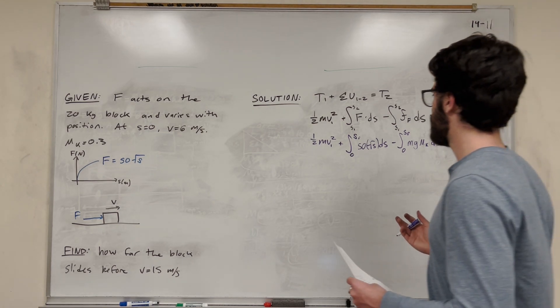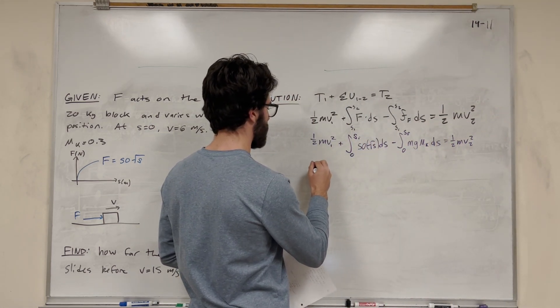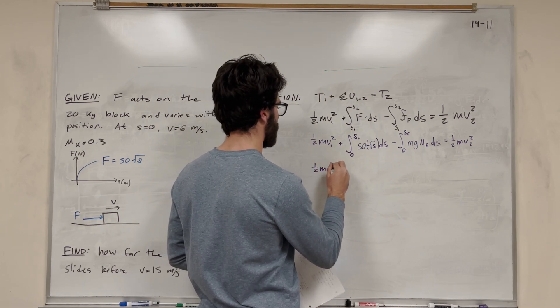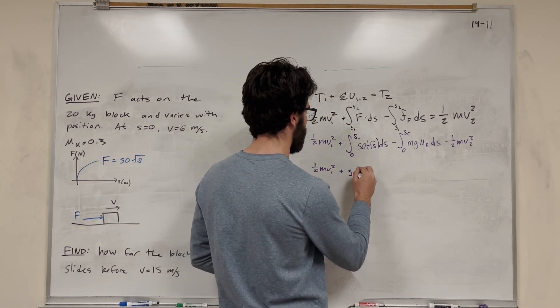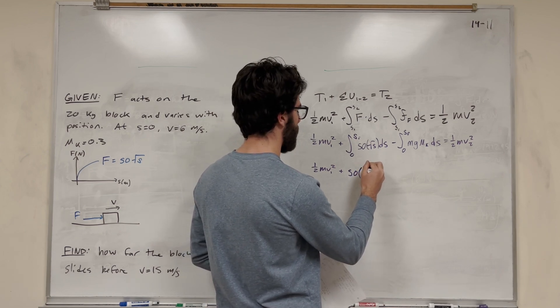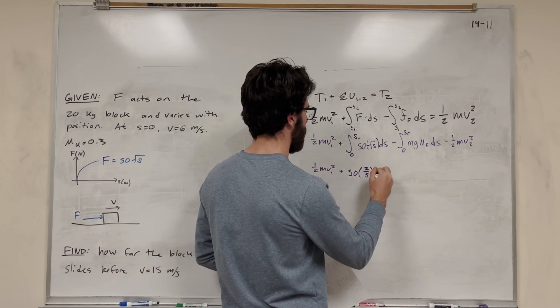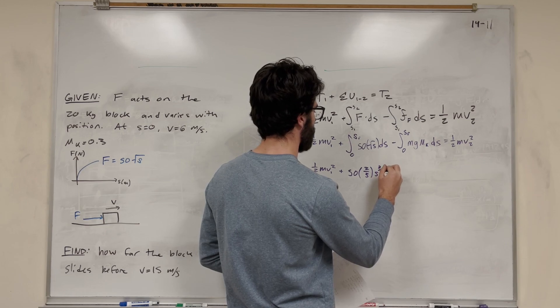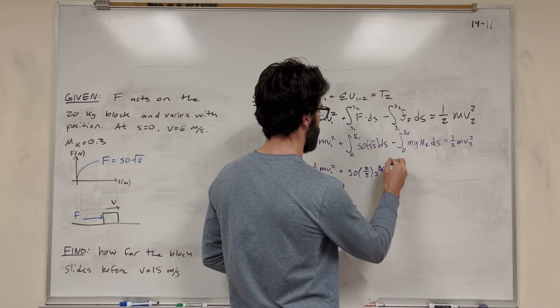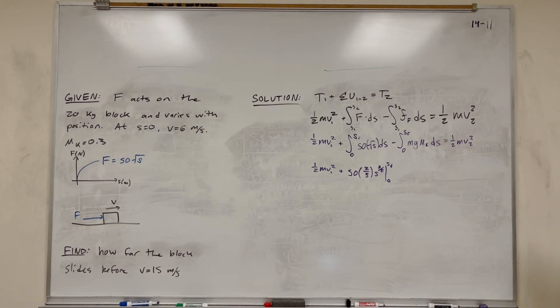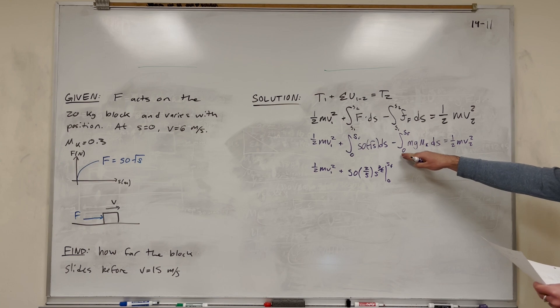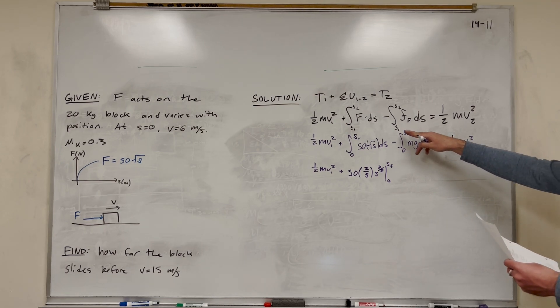Now all of this is equal to one-half mass velocity 2 squared. Let's go ahead and solve these integrals. This kinetic energy is going to stay one-half mass velocity 1 squared, plus, now this integral, the 50 can get factored out. Then the integral of square root of s is going to be two-thirds s to the three-halves. This is on the bounds 0 to s final. So we have this integral here.